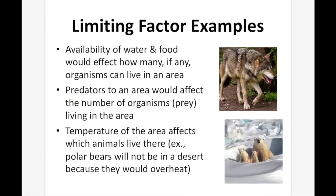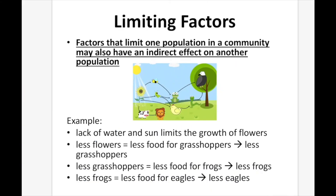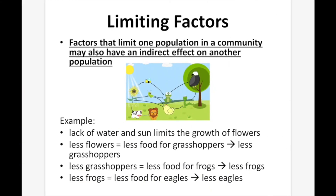Limiting Factor Examples. The availability of food and water would affect how many, if any, organisms can live in an area. Predators in an area would affect the number of organisms' prey living in that area. And the temperature of the area affects which animals live there — for example, polar bears would not be in a desert because they would overheat.